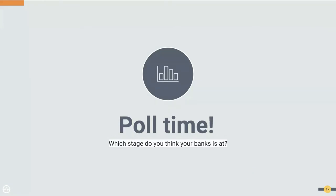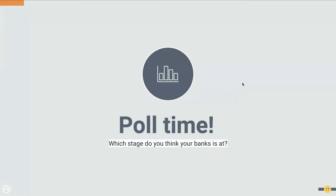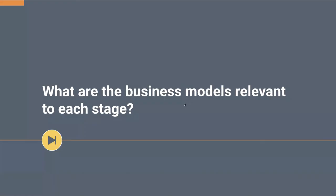Let's take a moment for a poll. We'd like to ask: which stage do you think your bank is at within the stages we just discussed? The results are in — 61% of answers are in stage two. The majority is in stage two, which is great — it means they've started with APIs, but there's a lot more that a bank can do.